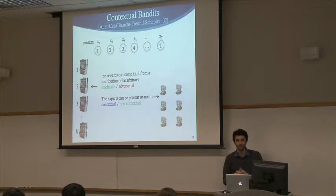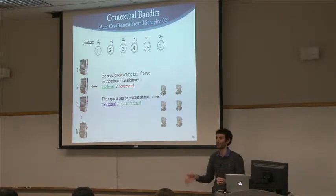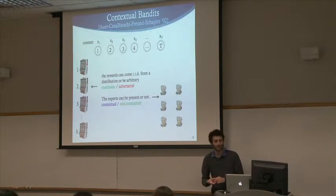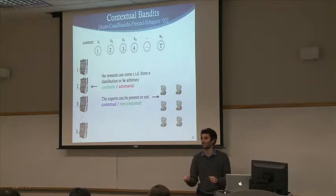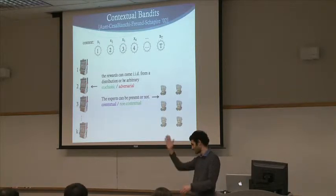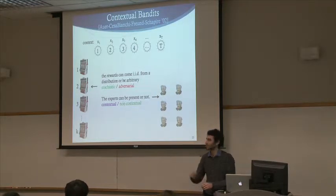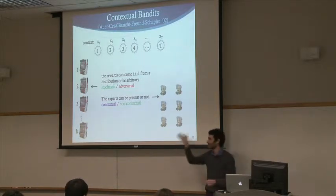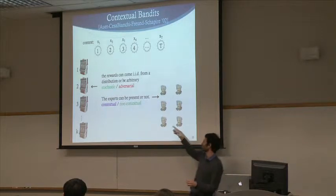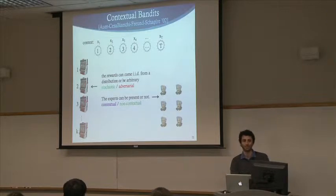There are a couple of settings here. The reward could come from some distribution — each arm having different means and paying off accordingly — or it could be adversarially set, where an adversary looks at your algorithm and past history and sets rewards for the next round adversarially. You can either have context functions or not. The non-contextual stochastic problem is the easiest, and the adversarial contextual problem is the most difficult.